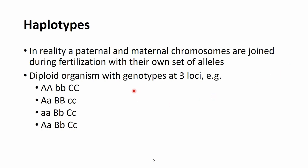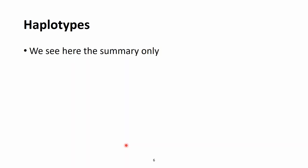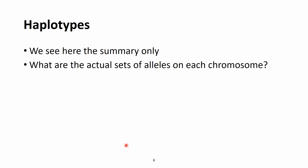For the sake of example, let's say that we have four individuals and at four loci we have these genotypes. What we see here are summaries only. Of course we can ask the question: what are the actual sets of alleles on each chromosome? For the first individual it is easy because its genotype consists entirely of homozygotes — A, A, B, B, and C, C.